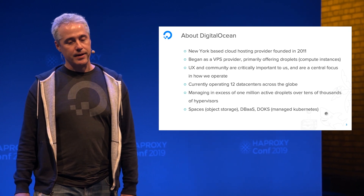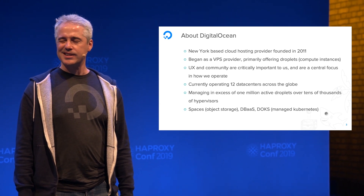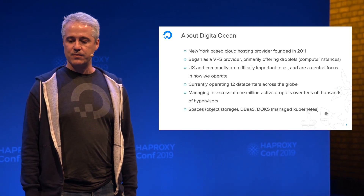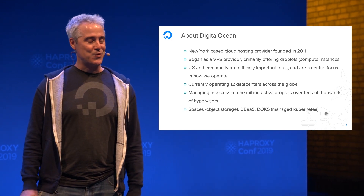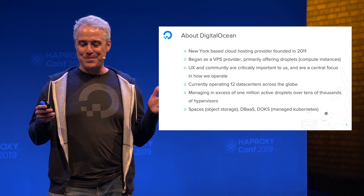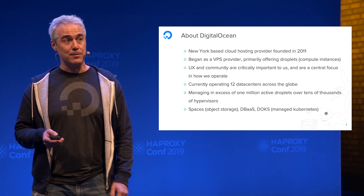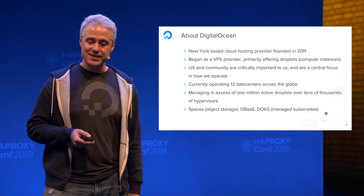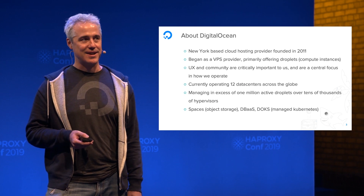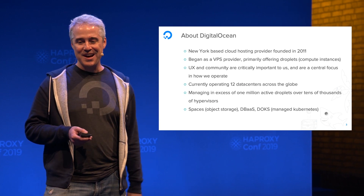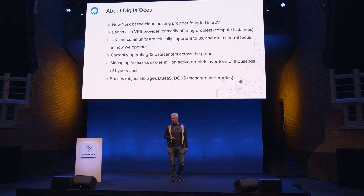Currently we operate in 12 data centers across the globe, and we're managing in excess of about one million active Droplets over tens of thousands of hypervisors today. We've grown from our beginning as just a single Droplet offering. We now have an S3-compatible object storage offering called Spaces, a DBaaS service, a managed Kubernetes platform called DKS, and expanded networking capabilities with Cloud Firewall and nascent VPC support.